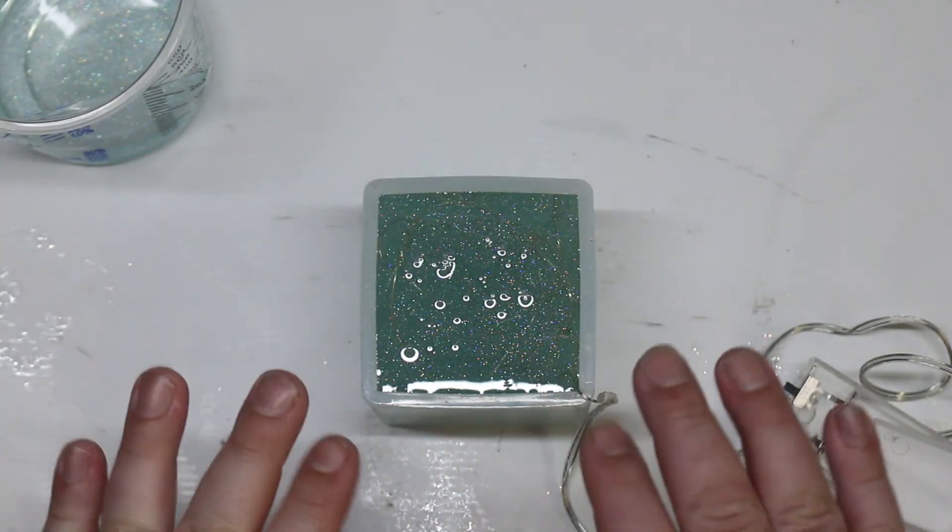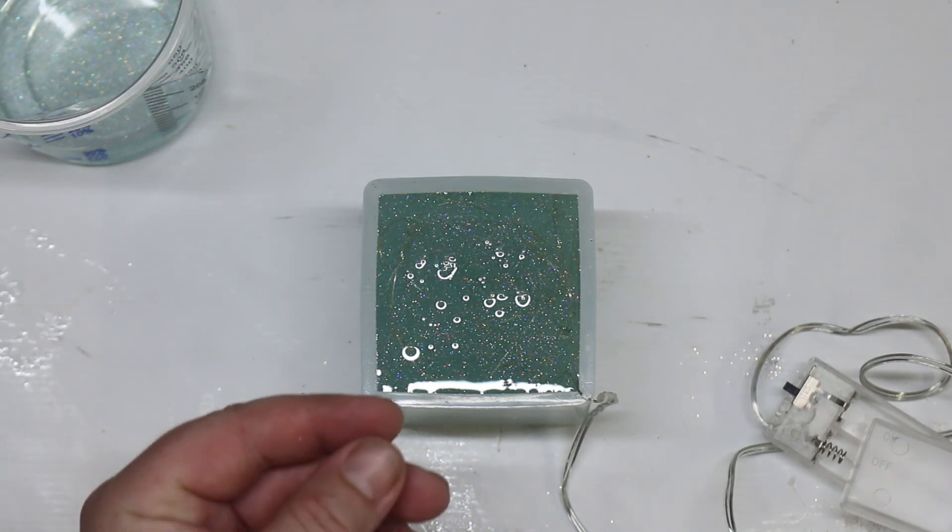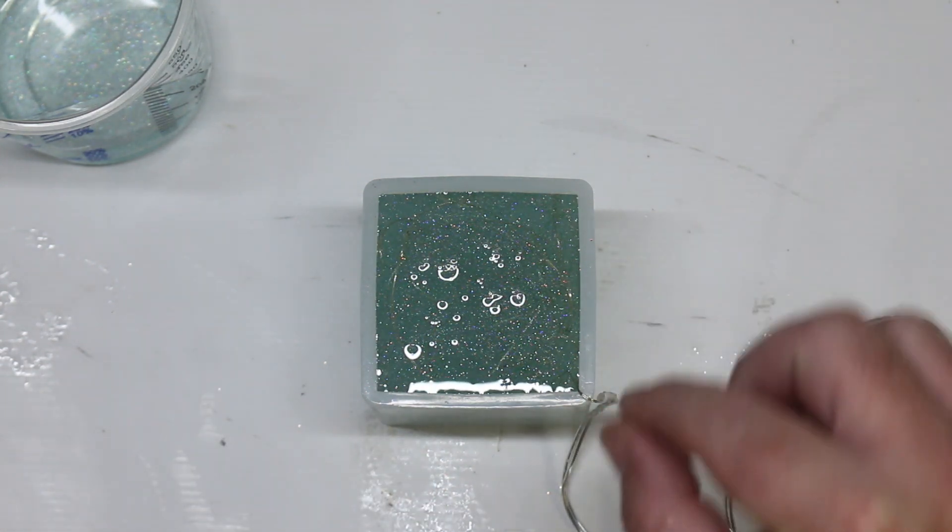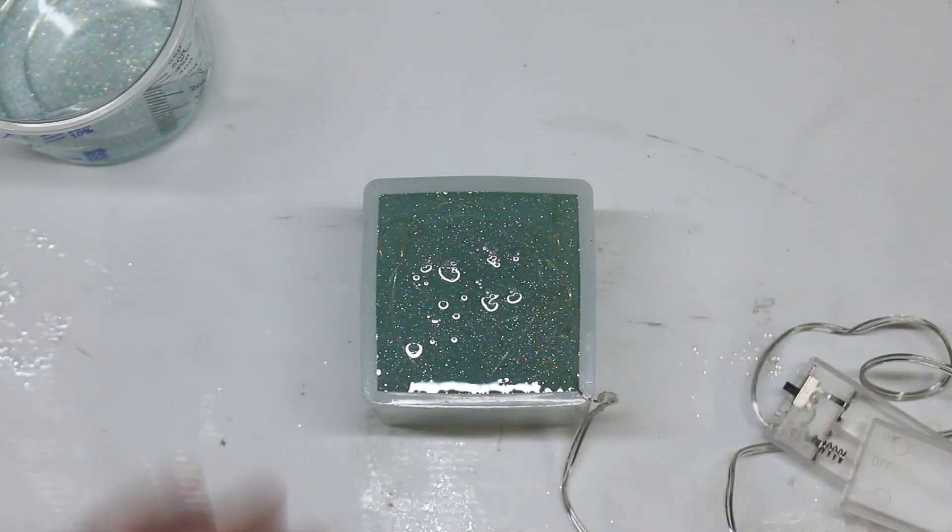So I've filled that up right to the top of the mold. If you feel that any of your wires are poking up a little too high, just grab yourself a stick and just push them back down, because you want to make sure that everything is below the resin.